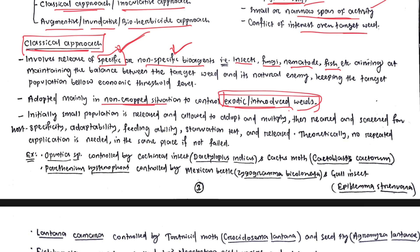The classical approach is mainly adopted in non-crop situations to control exotic or introduced weeds. Indigenous weeds already have natural enemies present, but introduced weeds do not have natural enemies here. So we bring the natural enemy from another country to control that introduced weed. Initially, a small number of natural enemies are released and they multiply on their own.